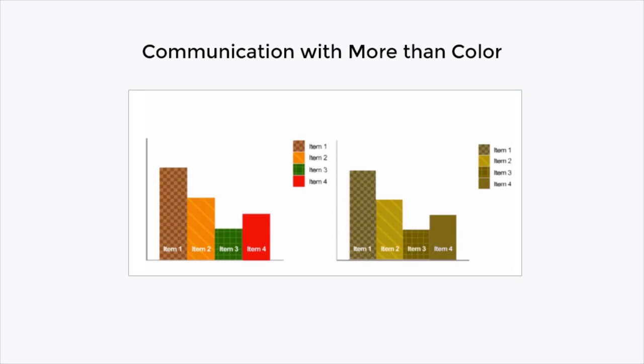The graphic shown here demonstrates how to use different patterns and text overlays on your graph to ensure that people who are color blind will not have issues reading and understanding your site's content.